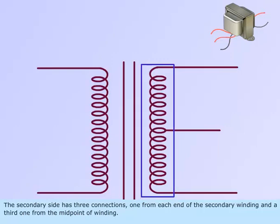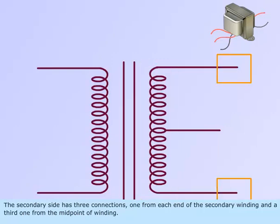The secondary side has three connections, one from each end of the secondary winding and a third one from the midpoint of the winding.